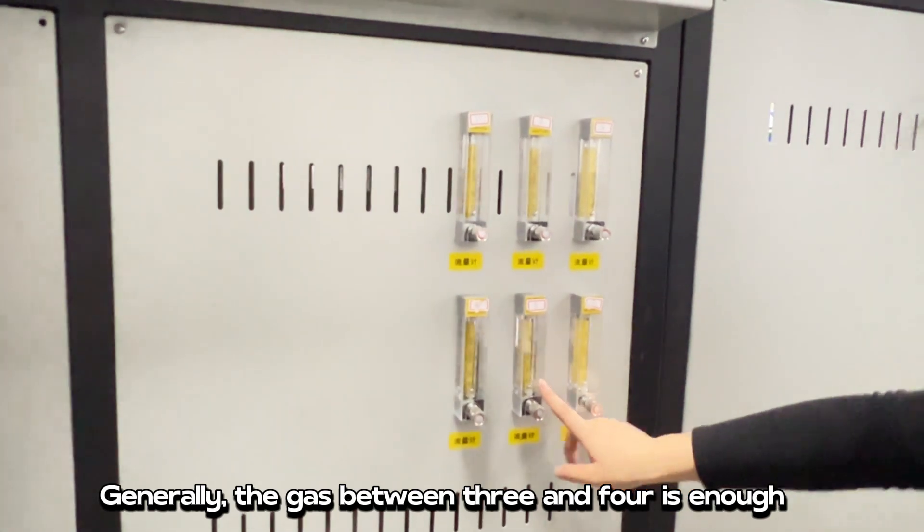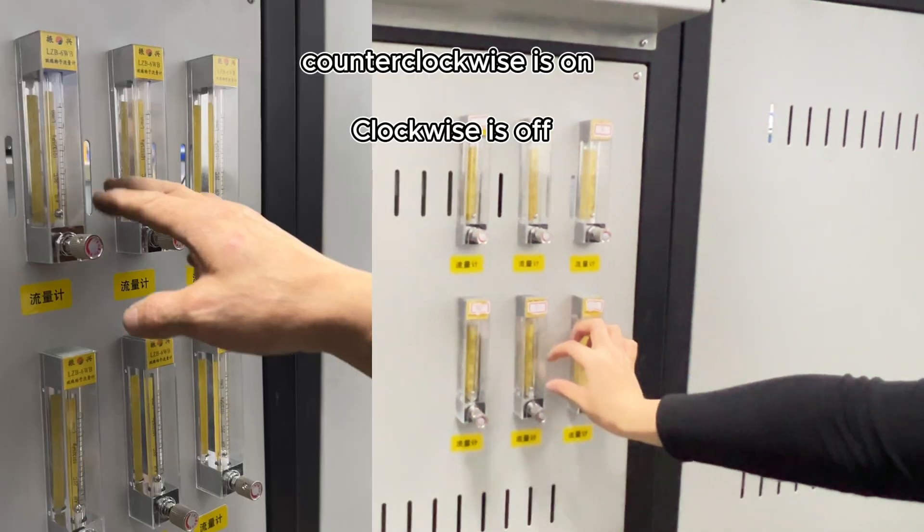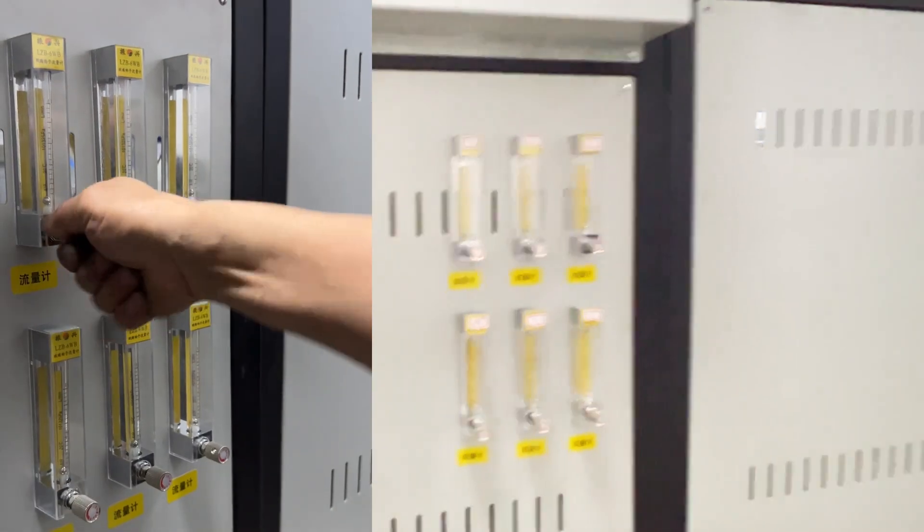Generally, the gas between 3 and 4 is enough. Counter clockwise is on, clockwise is off.